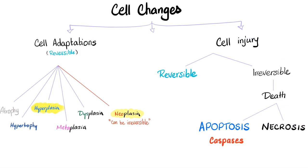Cell changes are divided into cell adaptations — reversible most of the time — or cell injury, which could be reversible or irreversible. Let's talk about cell adaptations, mostly reversible. Examples include atrophy, hypertrophy, hyperplasia, metaplasia, dysplasia, and neoplasia.